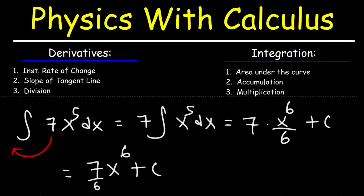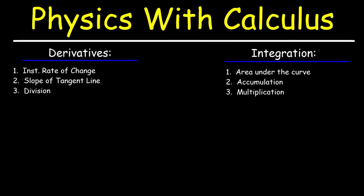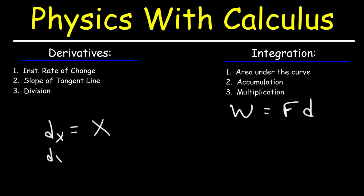I want to talk about the relationship between derivatives and division versus integration and multiplication. In physics, sometimes you have a simple formula to deal with; other times the formula might involve calculus. For instance, work is the product of force and displacement. Displacement could be in the x direction or the y direction — it's really the change in x or the change in y, since displacement is final position minus initial position.